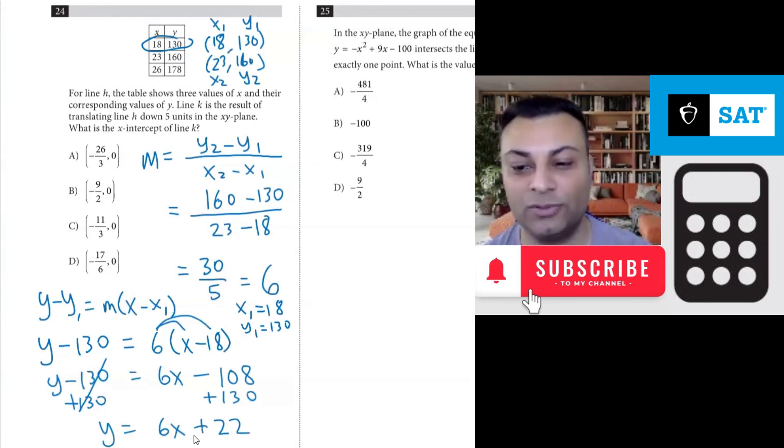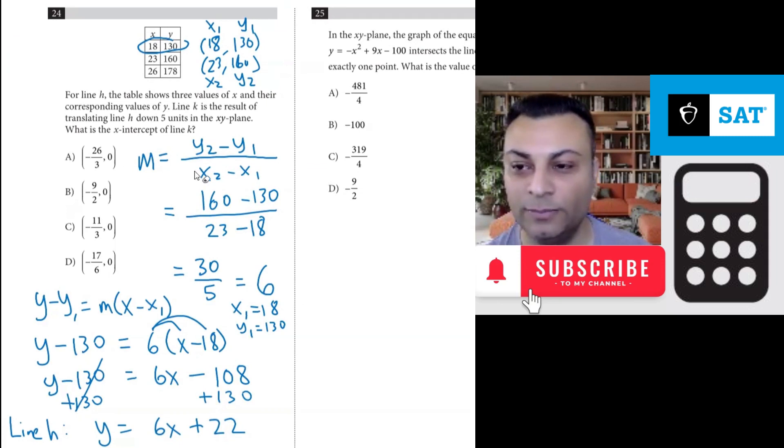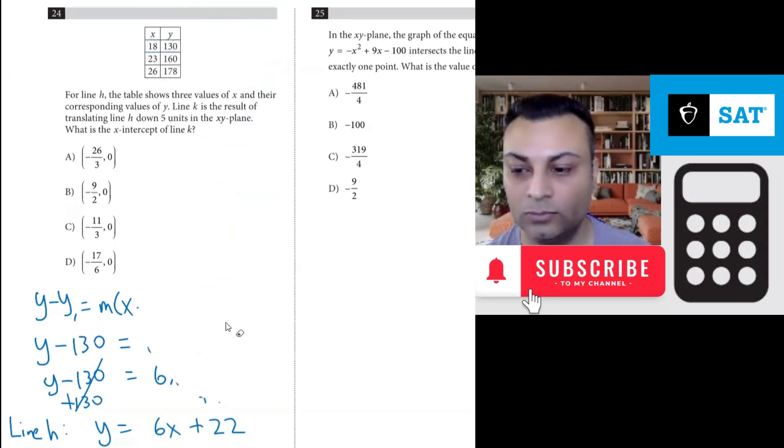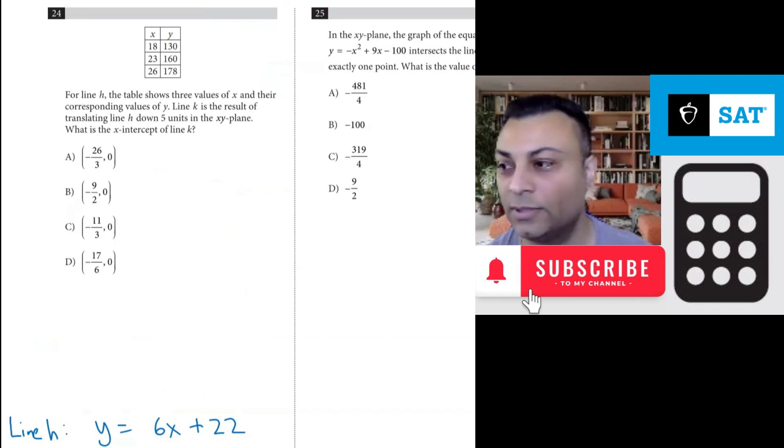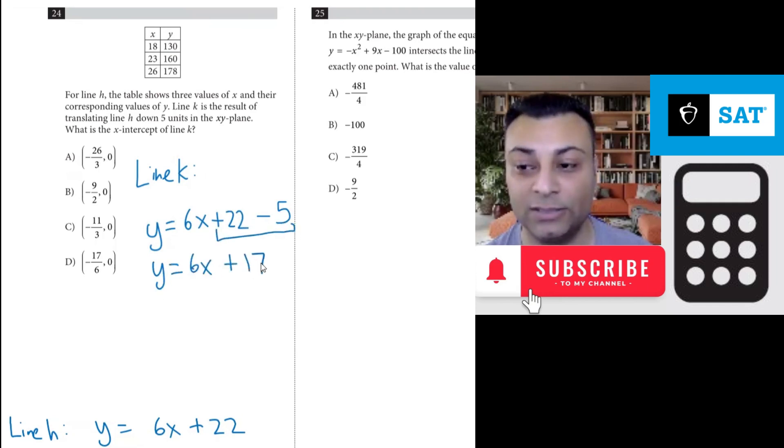Okay, well this is actually line H. Now we need line K. Line K is formed by this line and then we have to move it down 5 units. So we take 6X plus 22, we move it down 5 units. So you get Y equals 6X plus, you can do this in your calculator, you would get 17. 22 minus 5, 17. So this is line K.